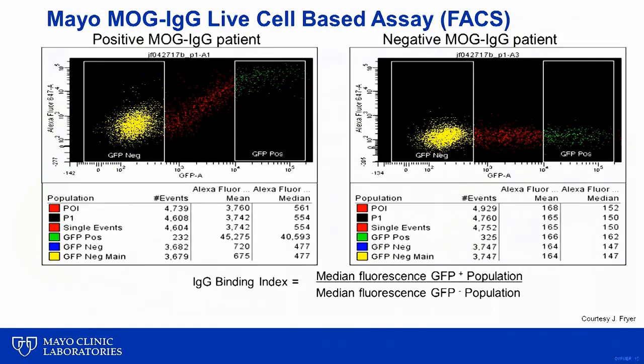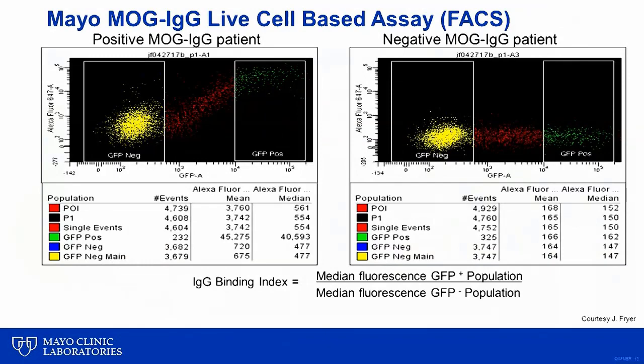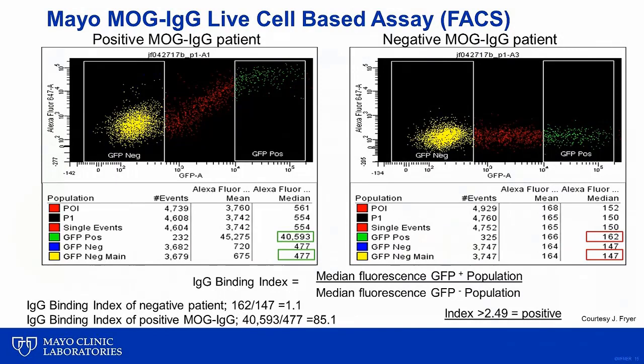The Mayo Clinic Neuroimmunology Lab was the first CLIA-approved lab to offer MOG antibody testing in the U.S., which became commercially available in the fall of 2017. The assay is very similar to the aquaporin-4 cell-based FACS assay but uses MOG as the antigen transfected in the HEC-293 cells. The binding index, which is the ratio of the fluorescence of the GFP-positive transfected cells over the fluorescence of the GFP-negative non-transfected cells, is markedly elevated in MOG-positive patients and close to 1 for negative patients.